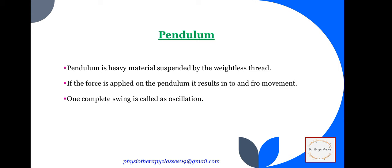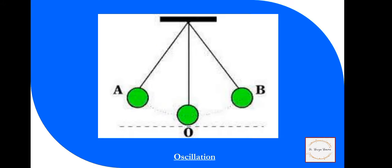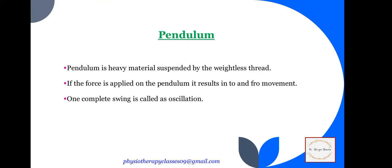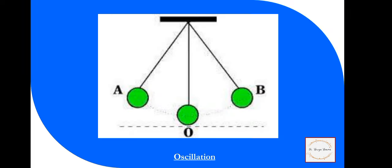The next principle is pendulum. A pendulum is a heavy material suspended by a weightless thread — you have a long stick with a very heavy weight suspended on top. If a force is applied on the pendulum, it results in a to-and-fro movement. One complete swing is known as an oscillation. The distance from A to B is one oscillation. This is the pendular movement.